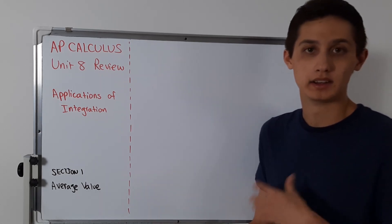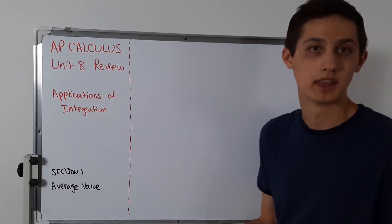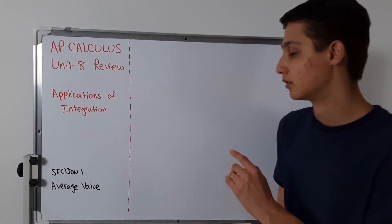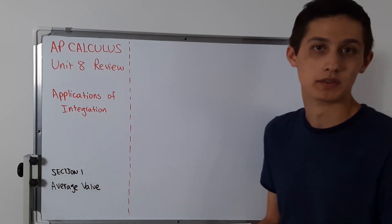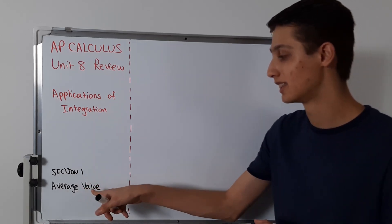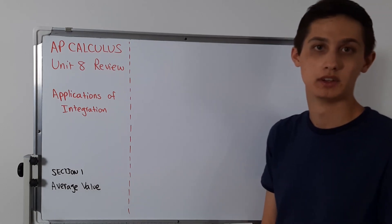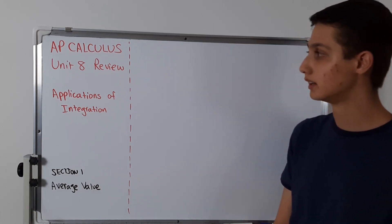Here in calculus, if you do that, that's just going to be the average rate of change of a function, versus instantaneous, which is the derivative. Here we're talking about not the average rate of change, but the average value of a function.